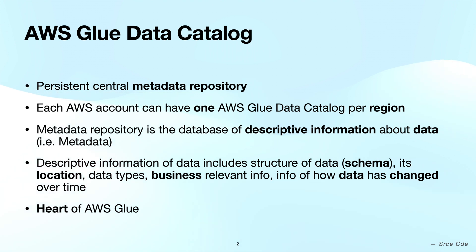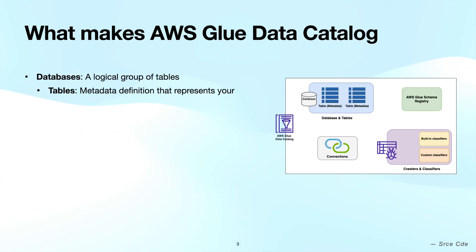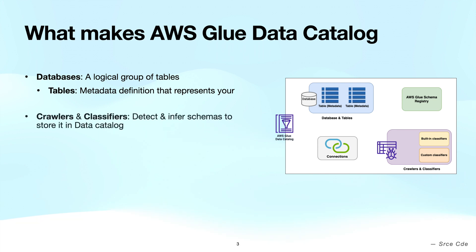The components that make up the Data Catalog are: first, a database, which is a logical group that contains a number of tables, and the tables hold the metadata information about the underlying data. Second, crawlers and classifiers — crawlers are created to scan data in different repositories and detect and infer schema with the help of classifiers to create table definitions of the data.